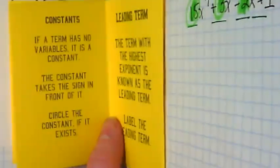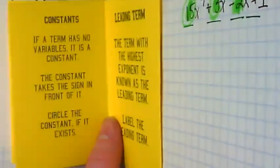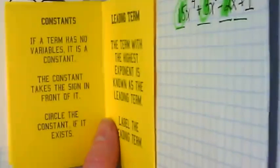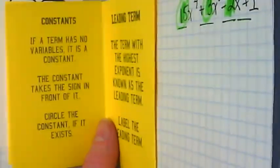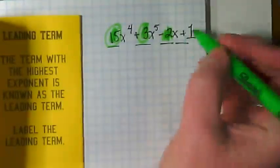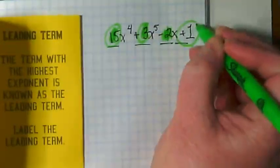Constants. If a term has no variables, it is a constant. The constant takes a sign in front of it. Circle the constant if it exists. What is our constant in this? There is our constant.